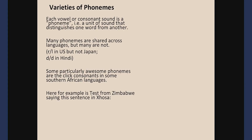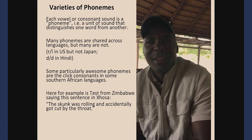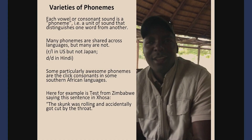While traveling in Mozambique the speaker met a guide named Testy who speaks six languages fluently, including Xhosa. He demonstrated click consonants — there's a sentence in Xhosa that has all the different clicks and means roughly 'the skunk was rolling and accidentally got cut by the throat.' Listen to him say the sentence first in English, then in Xhosa with all its click consonants.